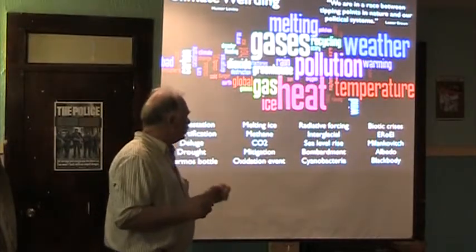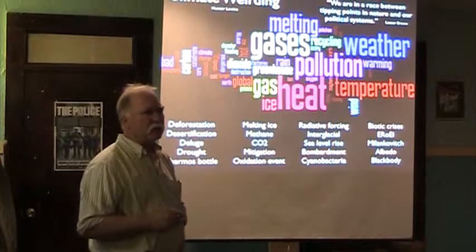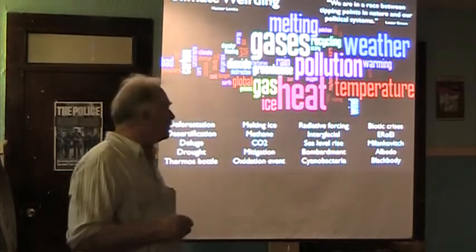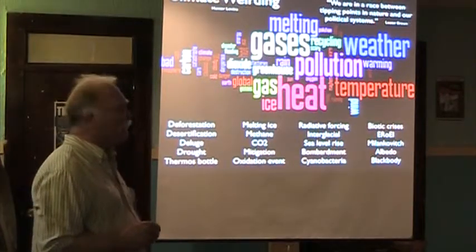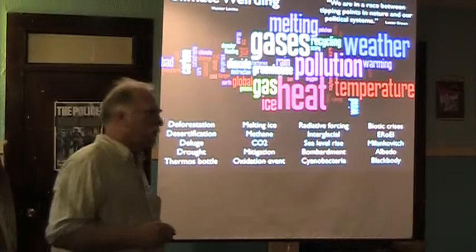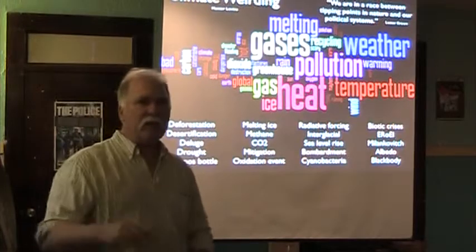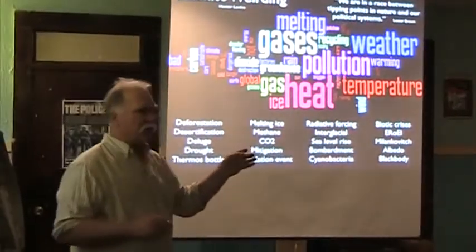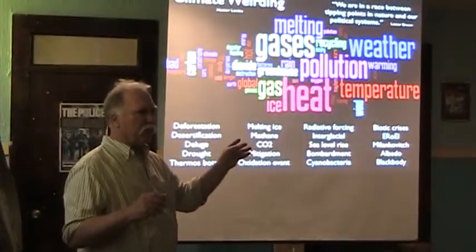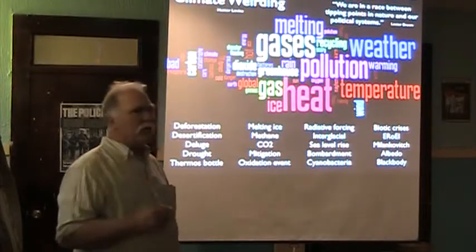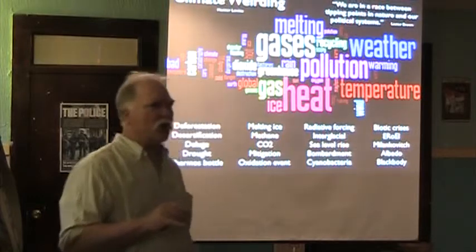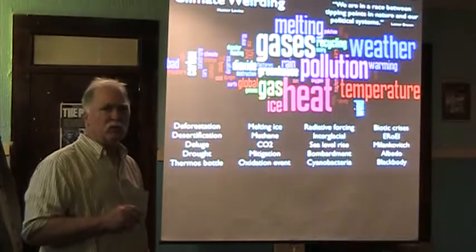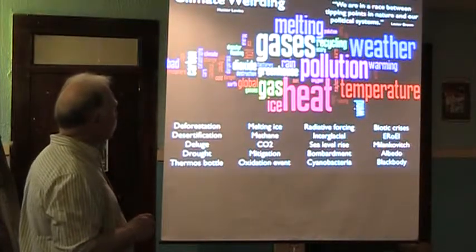Glacials and interglacials in the ice age, the age of bombardment of our planet — which was an exciting time not to have been here. Cyanobacteria, our very distant and remote ancestors. How many people here have heard of Milutin Milankovic? Albedo is sort of an odd scientific term which means reflectance — for some reason scientists always come up with terms like that. For people who have ever taken a physics class, are you familiar with the concept of a black body? That would be a no. This is also one of the important things to understand. So let's see if we can get started here.